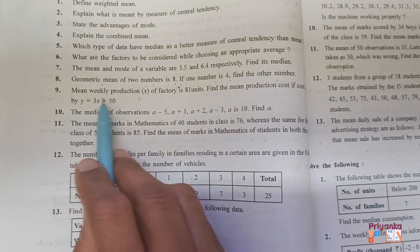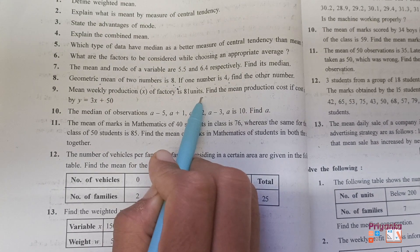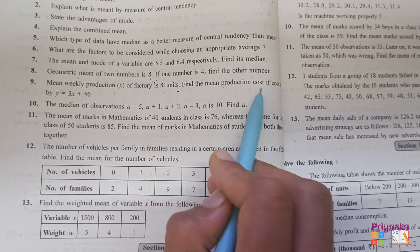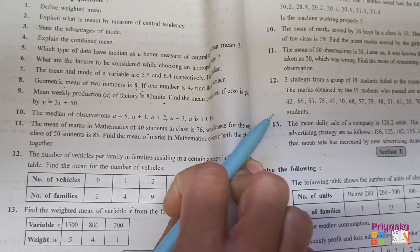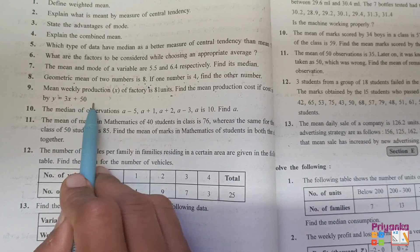Next question. Mean weekly production x of a factory is 81 units. Mean is given 81. Find the mean production cost if the cost is given by y equals 3x plus 60.